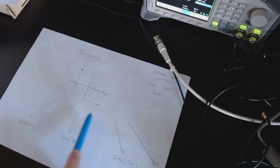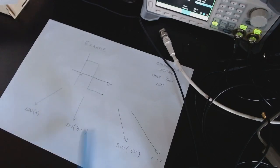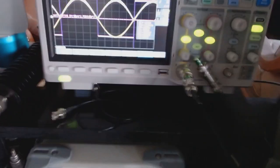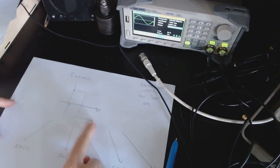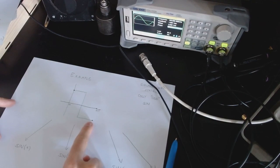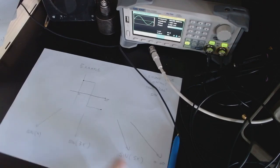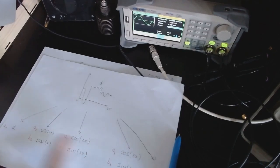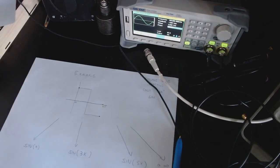One example that everybody knows is the square wave. The square wave contains components on every single odd sine harmonic and zero energy on everything else. I thought I could check this with the oscilloscope using my signal generator to generate two signals: the square wave — the function I want to explore — and the basis signals such as sin(x), sin(3x), etc., to check what their corresponding coefficients are.